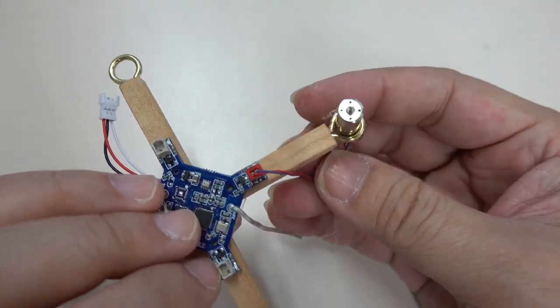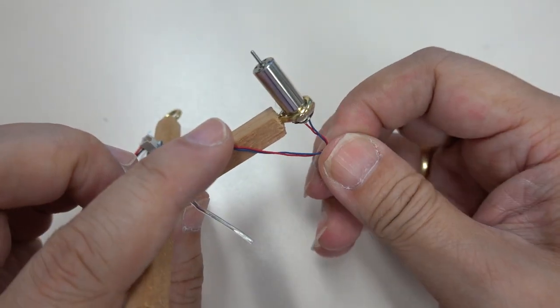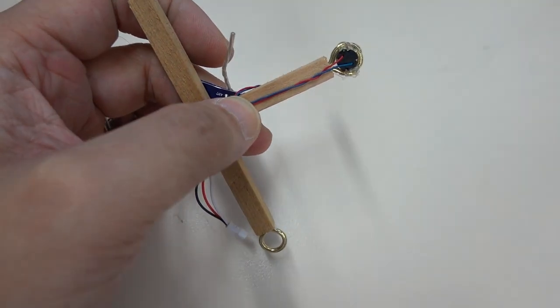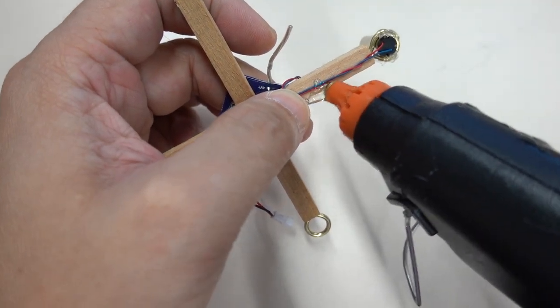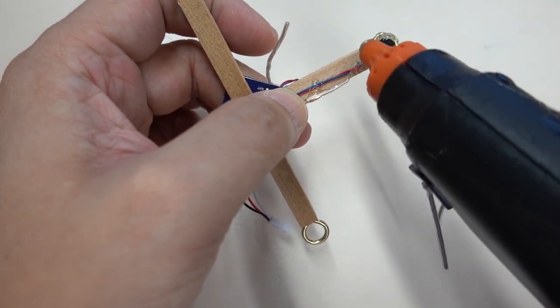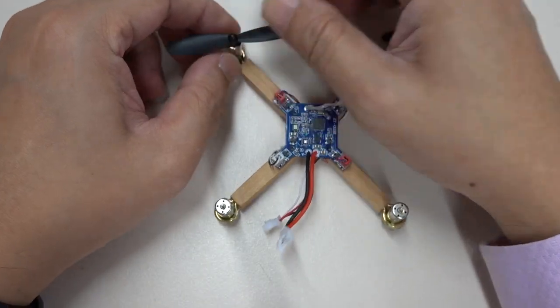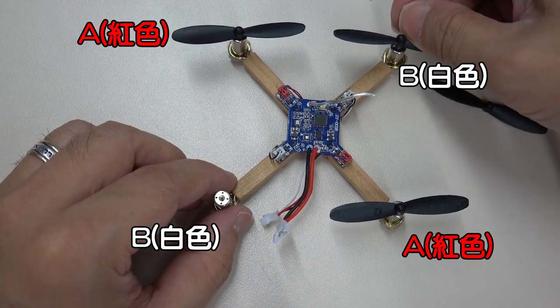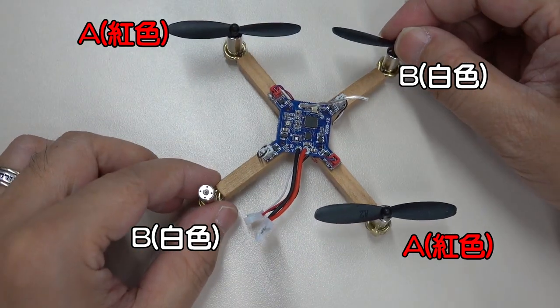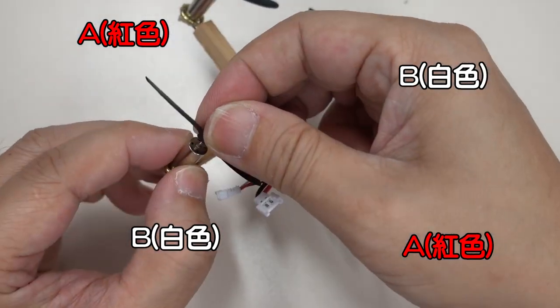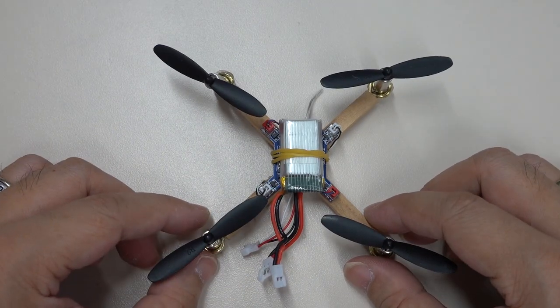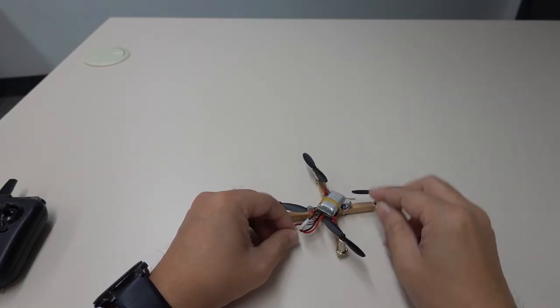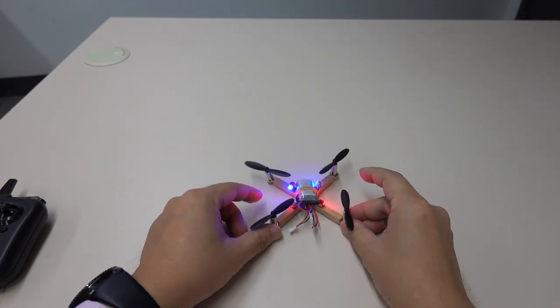After fixing, plug the motor cables into the main board. The wires can also be fixed with hot glue, so as not to entangle the propellers. The propellers are classified into A and B. A is clockwise and B is anticlockwise. Find a rubber band to fix the battery. Connect the power supply and you can fly now.